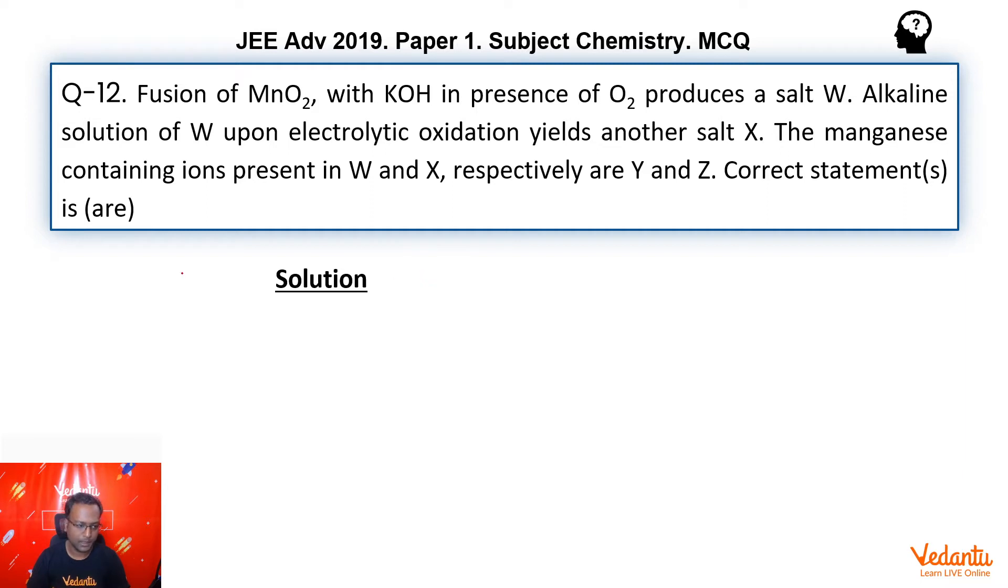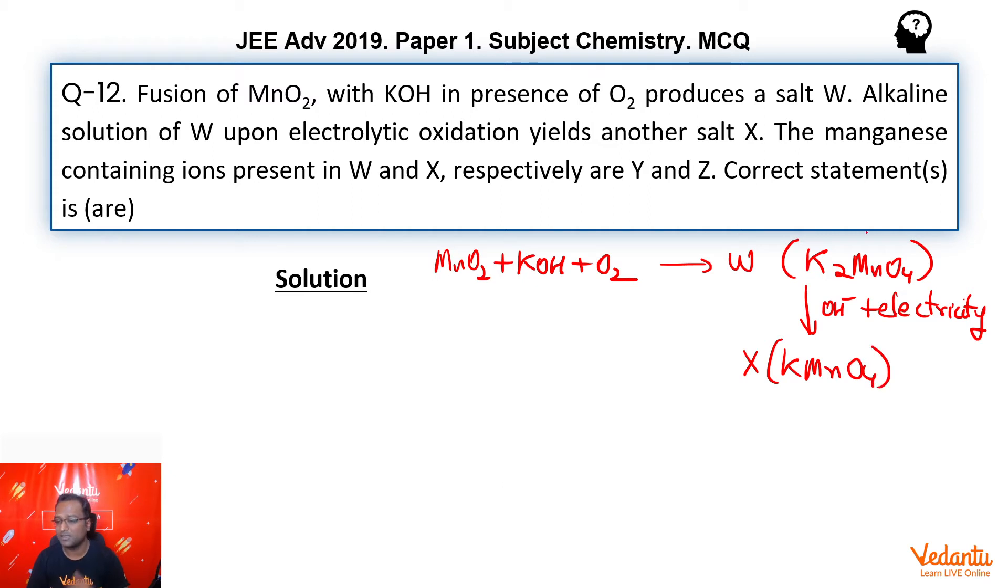So we have MnO2 when we react it with KOH and O2. If you remember KMnO4 preparation from pyrolusite, this is what the flow of reaction is. This gives us W, which is K2MnO4. Now K2MnO4, when I take it in basic medium and I pass electricity through it, that is forced oxidation, this will convert it into X, that is KMnO4. Oxidation state will go up from plus 6 to plus 7. He says that Y is basically MnO4 with a 2 minus, and X is MnO4 with a minus.